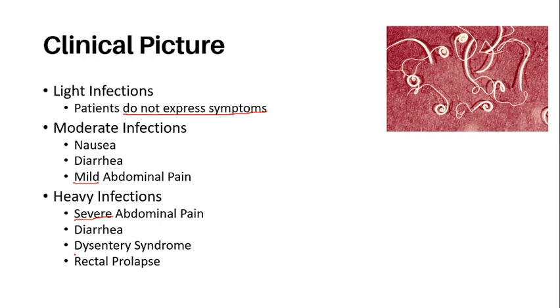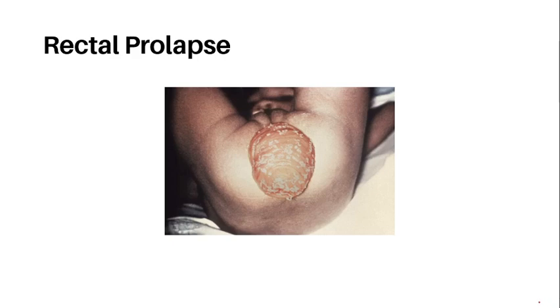Dysentery syndrome is possible. It is not the dysentery you might think of, like that brought about by gram-negative bacteria, although its symptoms are very similar in nature, but it is not dysentery per se. Another expression of a heavy infection is rectal prolapse — a condition in which the lower portion of the colon protrudes outside of the body. This is because the rectum loses its internal support as the worms burrow their heads into the intestinal lining, loosening the elastic epithelium and weakening the surrounding muscles.